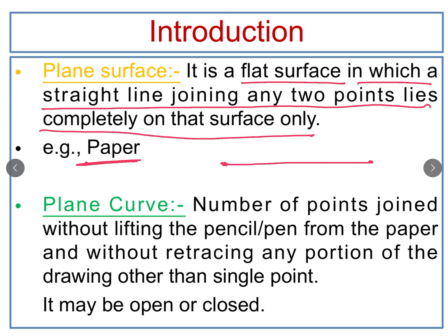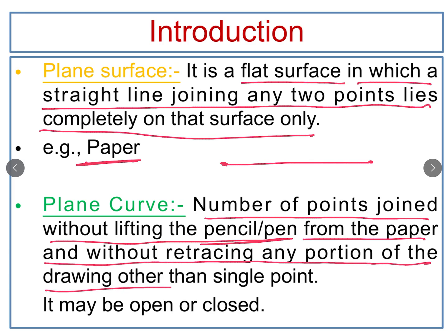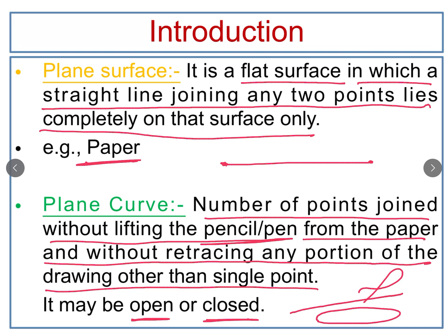Next we have plane curve. A plane curve means a number of points joined without lifting the pencil or pen from the paper and without retracing any portion of the drawing other than a single point. If we draw a curve without lifting the pen, all such curves are called plane curves. They should not be overlapping or retracing. A curve may be open or closed — this one is a closed curve while this line is an open curve.